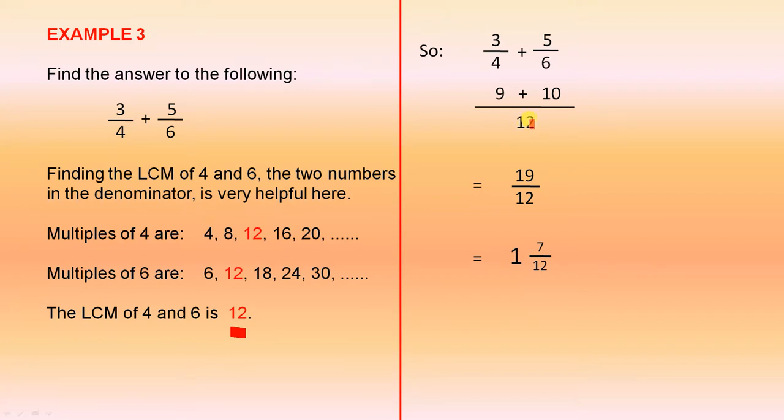And you'll find that 3 on 4 equals 9 on 12, and 5 on 6 equals 10 on 12. But how did we actually get the 9 and the 10? Well there are many ways you can do it, but here's a really simple way. 4 divided into 12 goes 3 times. 3 times 3 is 9. So 3 on 4 is 9 on 12. 6 goes into 12 twice. 2 times 5 is 10. So 5 over 6 is the same as 10 over 12. So 9 plus 10 all over 12 is 19 over 12, which is 1 and 7 twelfths.